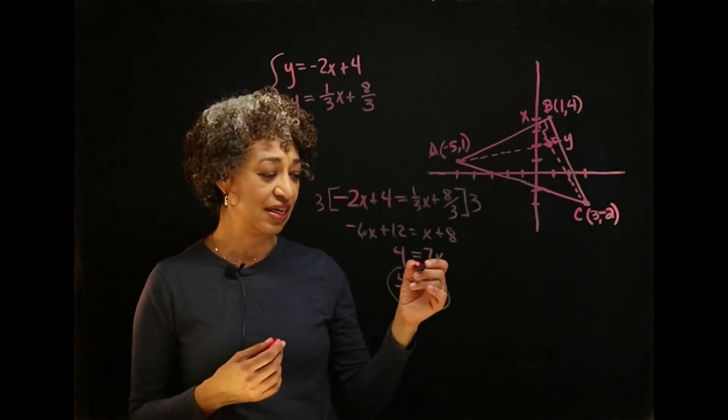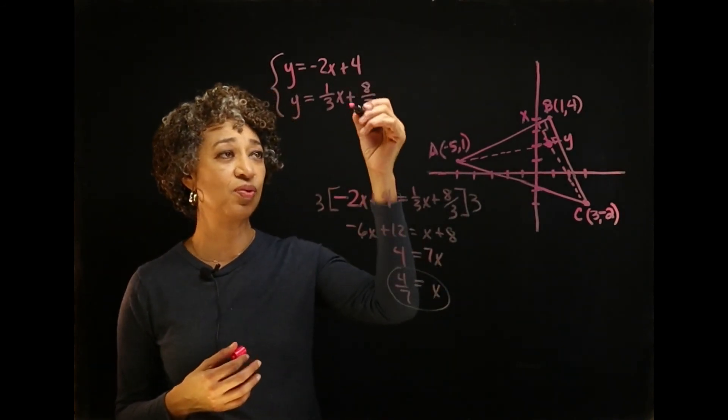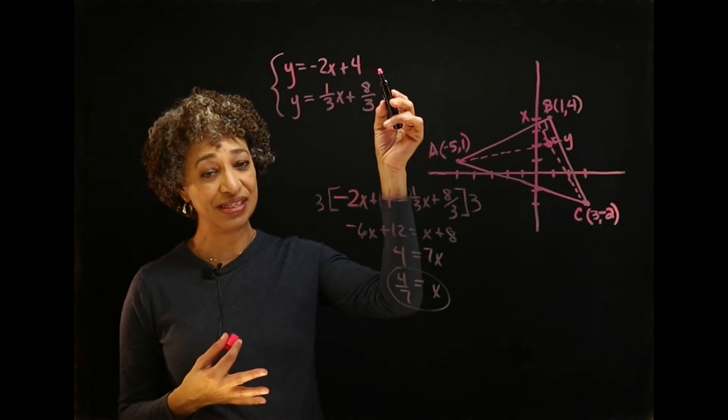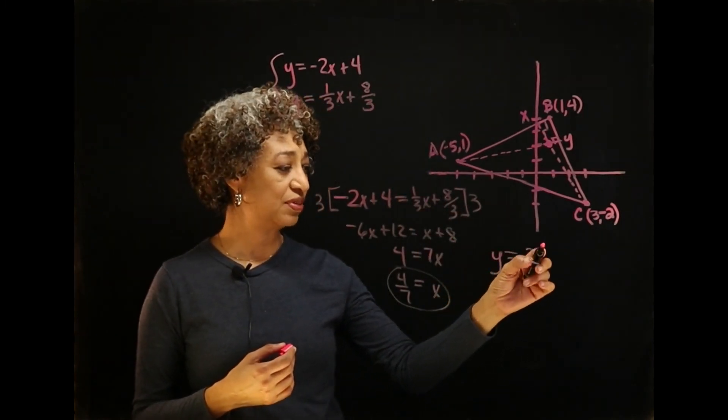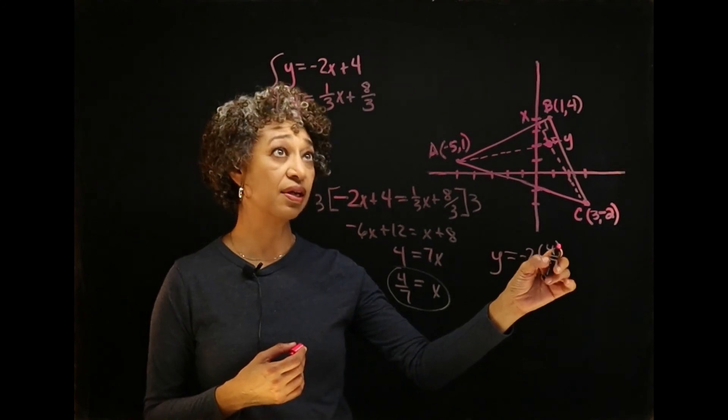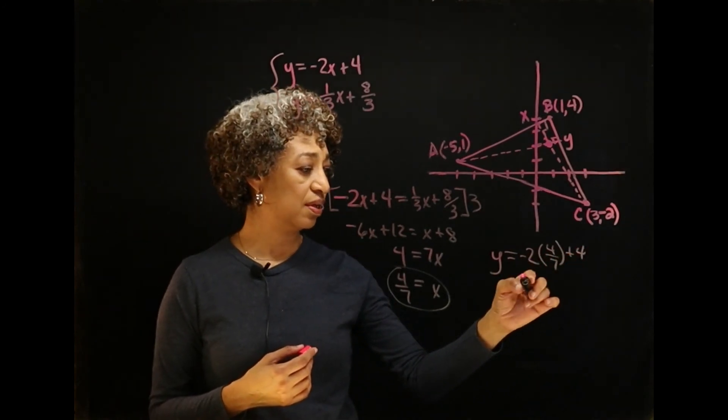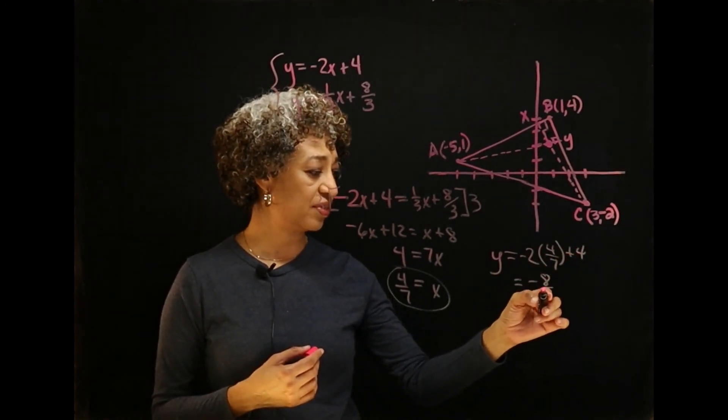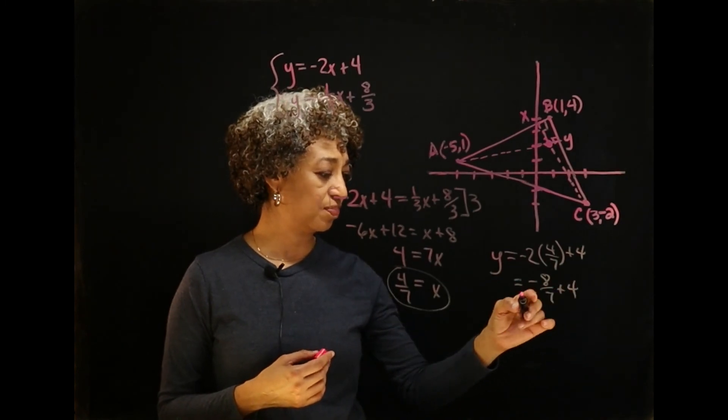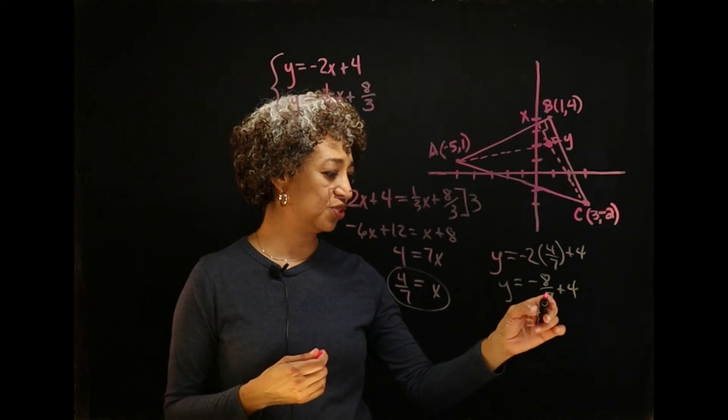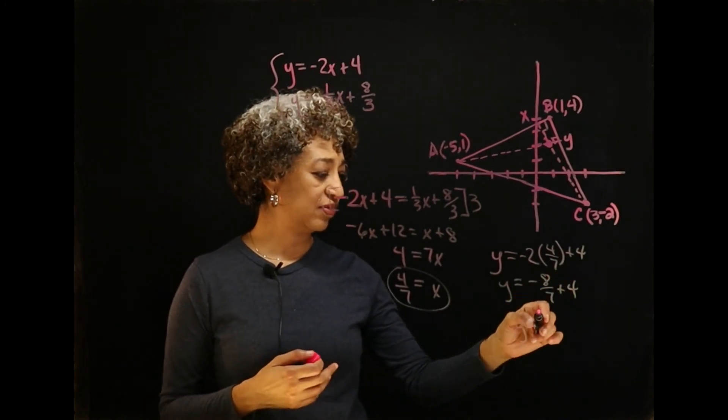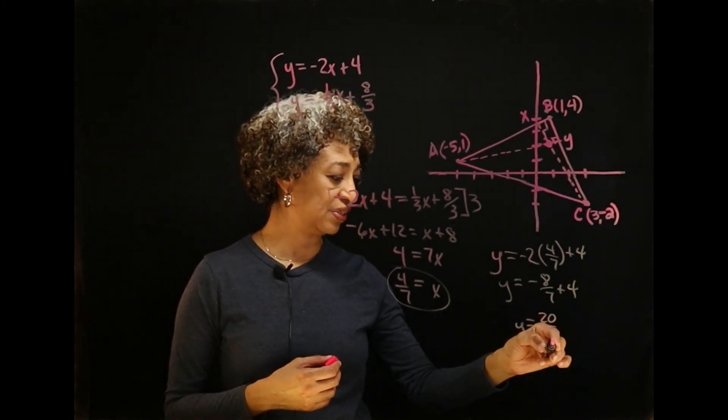Now all I have to do is plug this value into either one of these equations. The first one is easier, so here we go. So y is equal to negative 2 times 4 sevenths plus 4, which is negative 8 sevenths plus 4. And so y is equal to 28 sevenths, so 20 over 7.